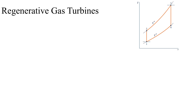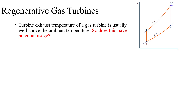When we looked at the Brayton cycle or the ideal Brayton cycle, we saw this TS diagram, and from this TS diagram what you can readily see is that the turbine exhaust temperature at state 4 is usually well above the ambient temperature. The turbine inlet is at state 3 and the turbine exhaust is at state 4, so the turbine exhaust gas is hot and it still has potential usage if it isn't discarded to the surroundings. One of the ways to utilize this is by means of a heat exchanger called a regenerator, which allows the air exiting the compressor to be preheated before it enters the combustion chamber.